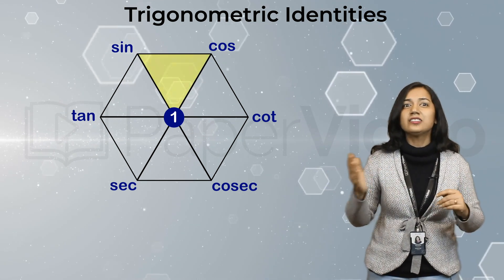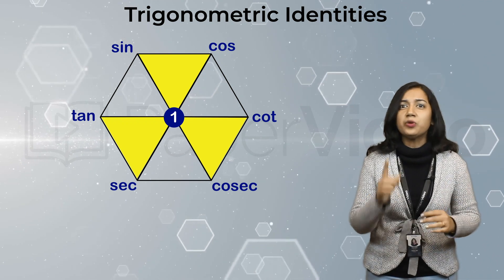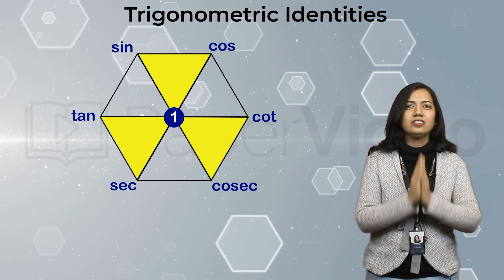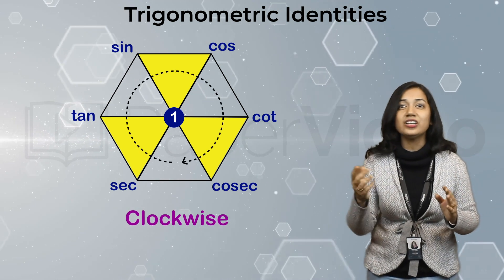Now, we will shade these three triangles inside the hexagon. We will generate one trigonometric identity for each triangle. The rule is to go in clockwise direction like this.